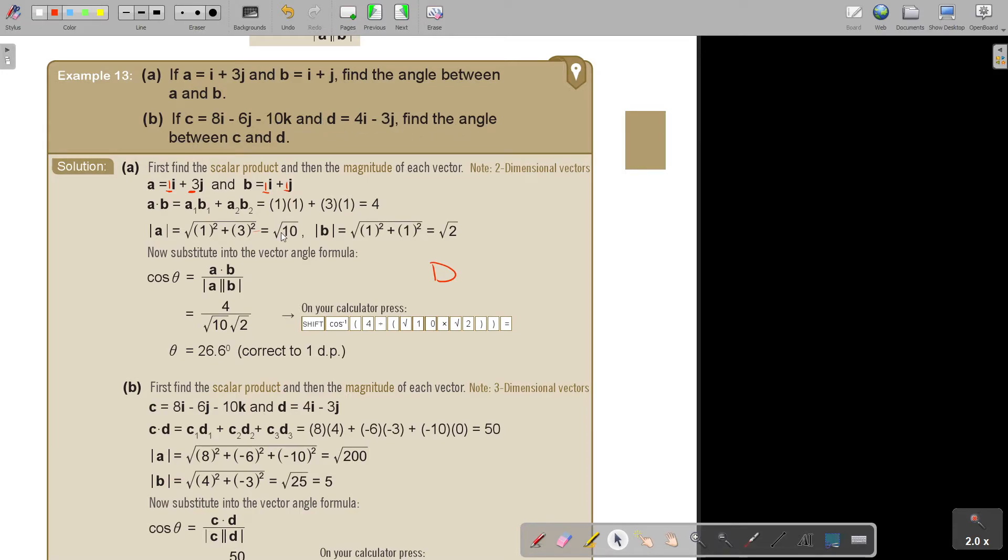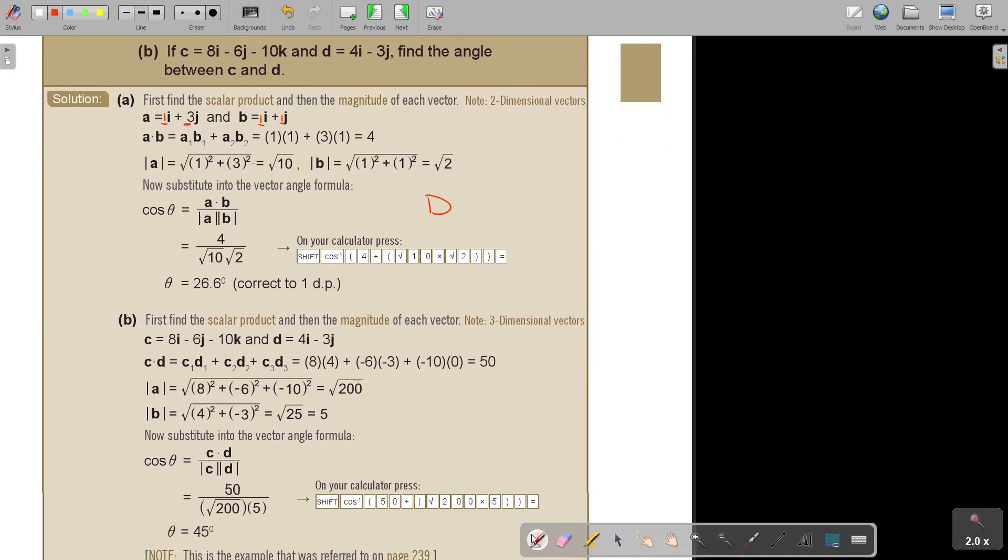And then they ask you to find, now it's 3-dimensional. It's actually the same. I first find the scalar product. Did you see? So I'm just going to also, now it's just 3. So 8 times 4, then negative 6 times negative 3, then negative 10 times 0. So that becomes, and it's 50. Then I find the magnitude of A, the magnitude of B. I think here's a printing mistake. It's the magnitude of C, and this is the magnitude of D. There it's correct again. In the next print, I will just correct it. And then I just fill it in. The values is correct. And then again, I press my shift cos.